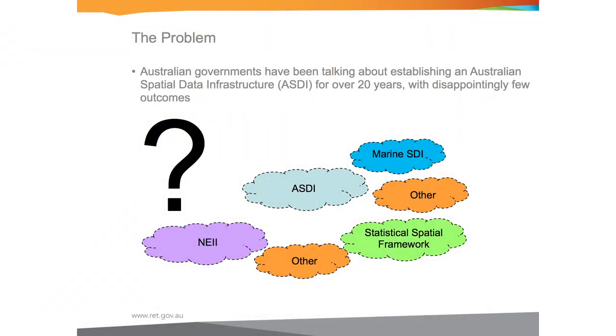We've talked about an Australian spatial data infrastructure for almost 20 years in this country, with very limited progress so far. So we're really breaking that down to fundamentals and asking: what is an ASDI and what does it look like? There are all these other activities within government — the statistical spatial framework, the marine spatial data infrastructure, multiple information infrastructures, and multiple NCRIS projects. What we're looking at is fundamentally changing that concept.